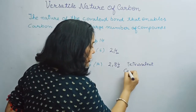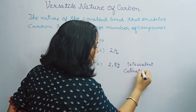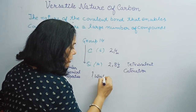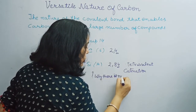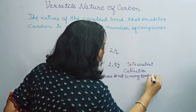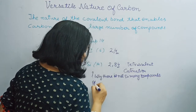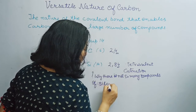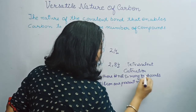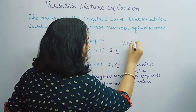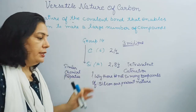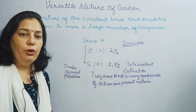Silicon does show catenation (self-linking capacity) and is also tetravalent. But the question arises: why are there not nearly as many silicon compounds in nature as there are carbon compounds? Carbon has three million compounds, whereas silicon compounds are comparatively very few.